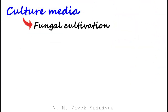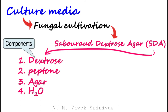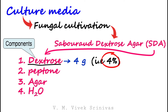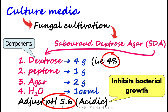The culture medium most commonly used for fungal cultivation is Sabouraud Dextrose Agar, abbreviated as SDA. Components present in this medium are dextrose at a high concentration of 4%, along with peptone, agar, and water. Finally, the pH is adjusted to 5.6, that is acidic pH. As discussed, the optimal pH for fungal growth is between 4 to 6. At this acidic pH, bacterial growth is inhibited in the fungal medium.